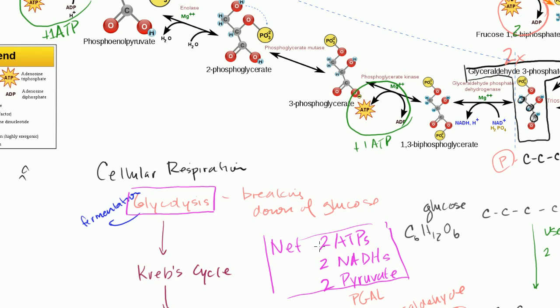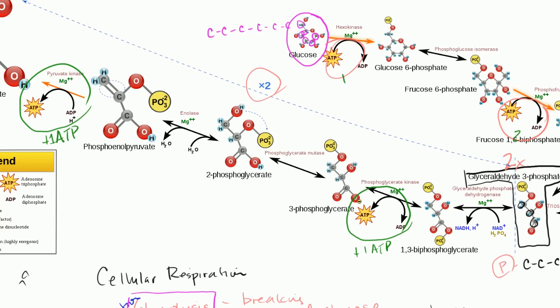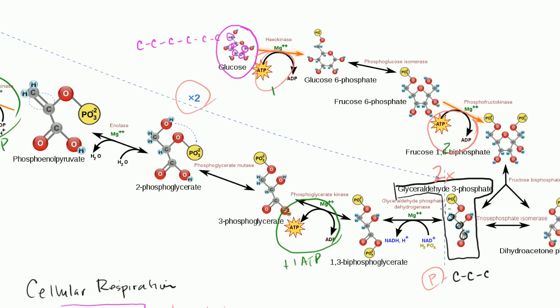And then the NADHs we see right here. For each phosphoglyceraldehyde, or glyceraldehyde 3 phosphates, or PGALs, or whatever you want to call them, at this stage right here, you see that we are reducing NAD plus to NADH.